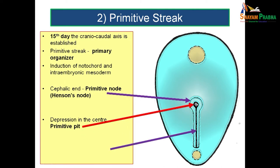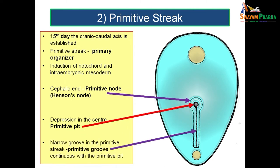Towards the caudal end of the disc, you can see a narrow groove in the primitive streak — this is known as the primitive groove, which is continuous with the primitive pit. So the three major regions of the primitive streak are: the primitive node or Hensen's node at the cephalic end, the primitive pit in the middle of Hensen's node, and the primitive groove along the caudal region.